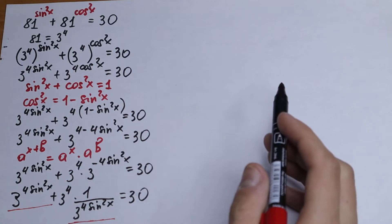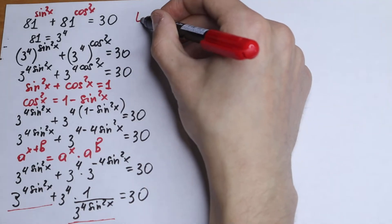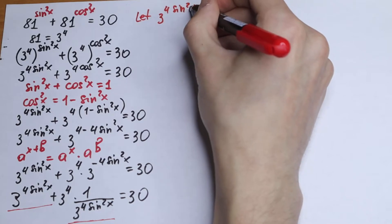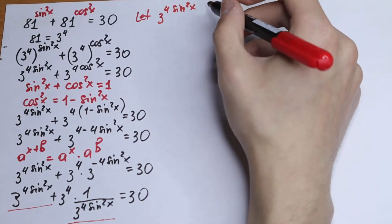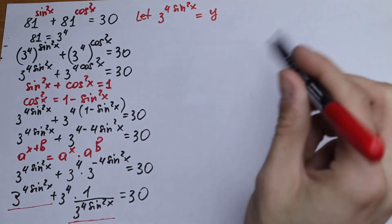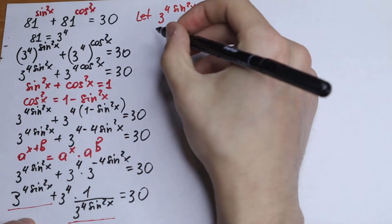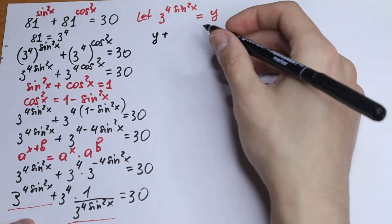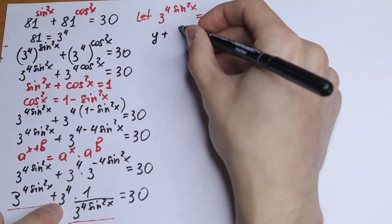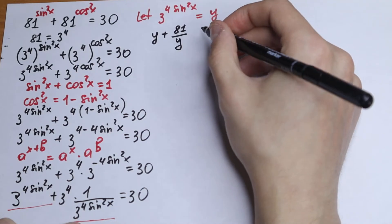We can see we have 3 to the power 4sin²x appearing in two places — they are the same. Let's use a substitution: let 3 to the power 4sin²x equal y. So we get y plus 81 over y equal to 30.